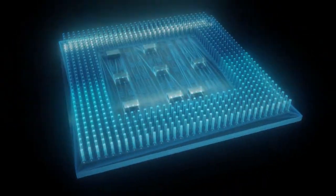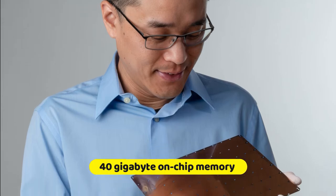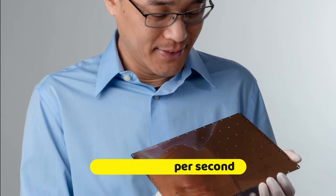These cores are connected by 200 petabits per second connections. The fantastic thing about this model is that the data is fed to the cores using 40-gigabyte on-chip memory with 20 petabytes per second bandwidth.